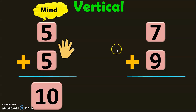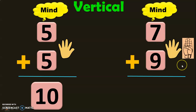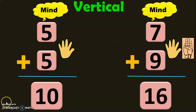Let us do the next example: 7 plus 9. 7 in the mind and 9 in the fingers. To keep 9 in the fingers, have 5 fingers on one hand and 4 fingers on the other. After 7: 8, 9, 10, 11, 12, 13, 14, 15, 16. So the sum of 7 plus 9 is equal to 16.